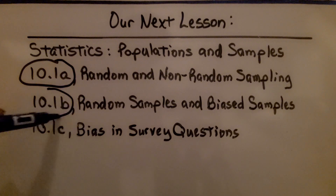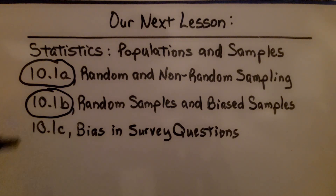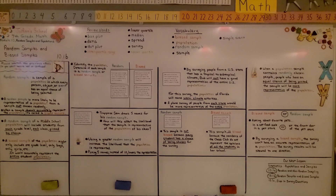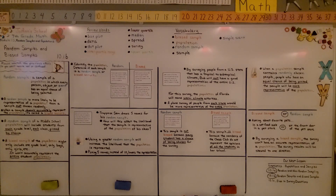We're finished with part B and will move on to the last part of 10.1, which covers bias in survey questions. Remember: in order for a sample to be random, every person, object, or event must have an equal chance of being selected. Have a great day, and please join me for the last part of the lesson.